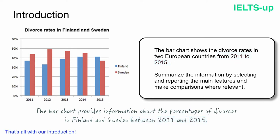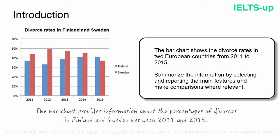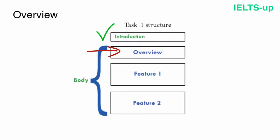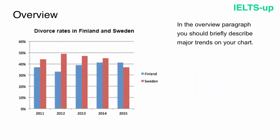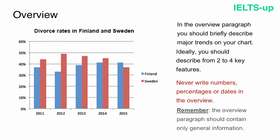That's all with our introduction — it is clear and specific. Now we move on to the second paragraph: the general overview. It is very important and you must provide the overview to achieve band 6 or more for task 1. In the overview paragraph, briefly describe major trends — ideally two to four key features. Never write numbers, percentages or dates in the overview. It should contain only general information.